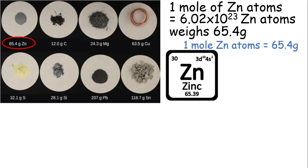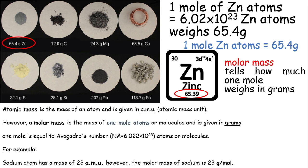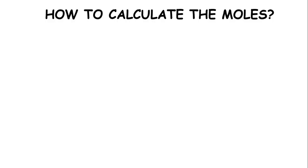So this is what we call the molar mass. The molar mass tells how much one mole weighs in grams. Now don't be confused with molar mass and atomic mass. Atomic mass is the mass of an atom and is given in amu, atomic mass units. But here we're talking about a mole of zinc atoms. Basically, the molar mass and atomic mass in this situation is the same.